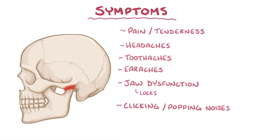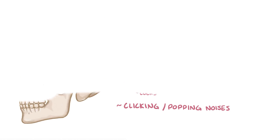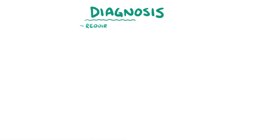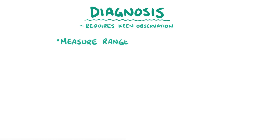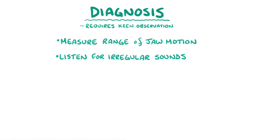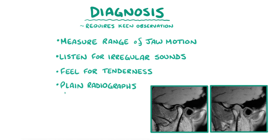Because of the various causes and types of temporomandibular disorders, a diagnosis requires keen observation, especially around factors that cause or worsen the problem. It's helpful to measure the range of jaw motion, listen for irregular sounds like clicking and popping, and feel for areas of tenderness. Plain radiographs and CT scans can show structural abnormalities or trauma, and MRIs can show changes in the articular disc and evidence of joint inflammation.